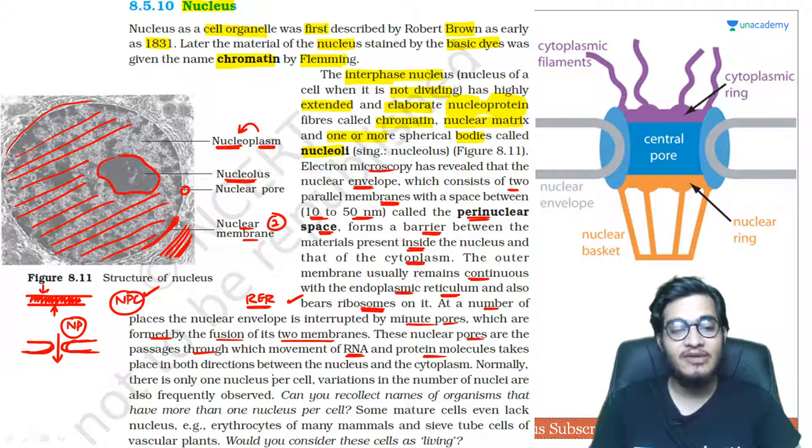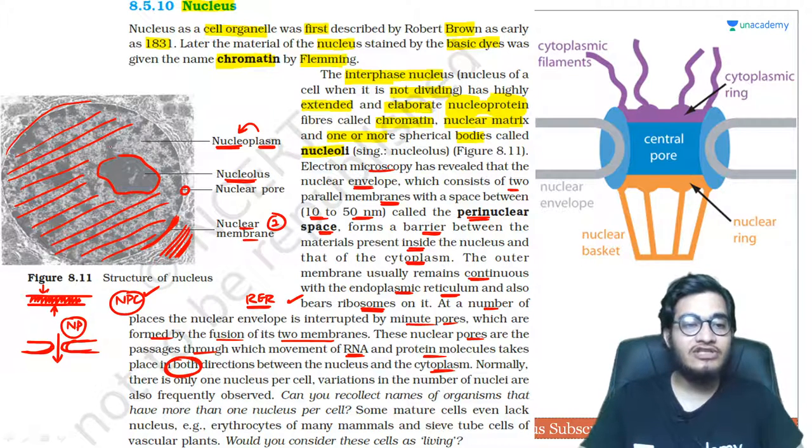These nuclear pores are passages through which movement of RNA and protein molecules takes place in both directions - from nucleus to the cytoplasm and from cytoplasm to the nucleus.